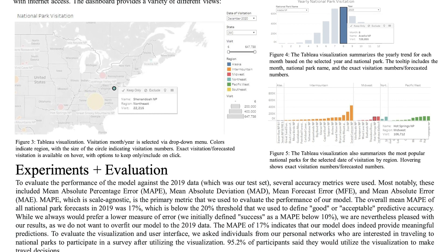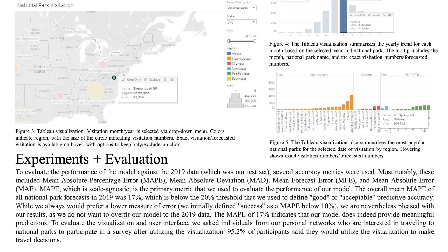When evaluating, our SARIMA model's 2019 predictions had an average mean absolute percentage error of 17%, lower than the 20% threshold that we defined as acceptable. To evaluate the effectiveness of our project as a whole, 21 individuals from our personal networks were asked to visit our dashboard. Over 95% of participants said that they would utilize our tool to make national park travel decisions. Overall, we are pleased with our project and hope that others continue to find it useful.